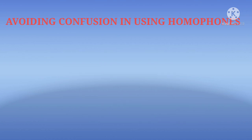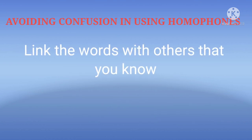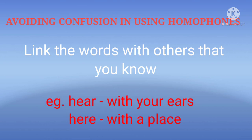Next, we have to link the words with others that we know already. For example, hear / here. The first word, H-E-A-R, hear, which means listen, we can link it with ears. And the second word, H-E-R-E, here, can be linked to a place. In this manner, practice using homophones.